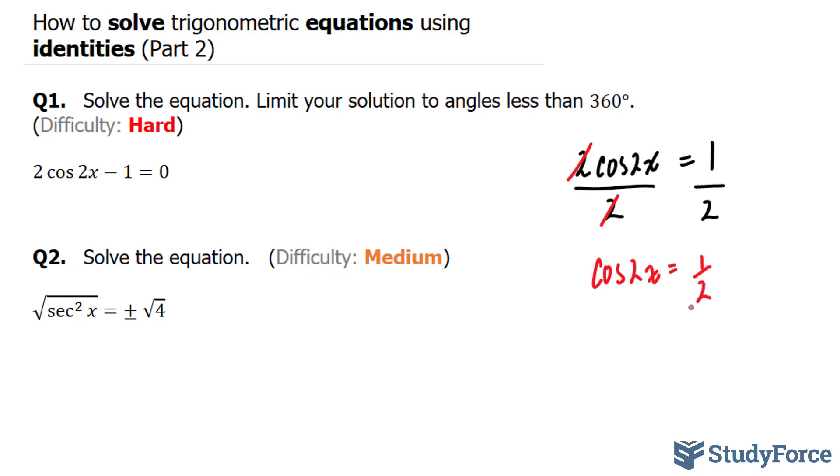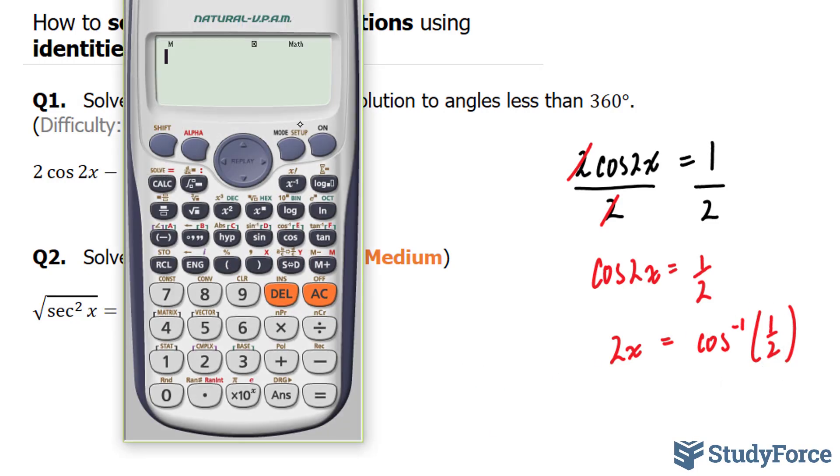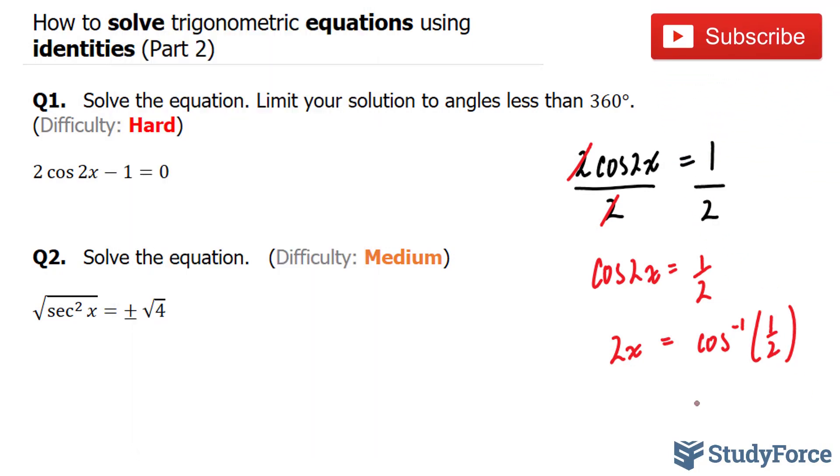Next, I'll use cosine inverse on both sides. This gives us 2x on the left side and cosine inverse of half on the right side. Now I need to find out what cosine inverse of half is equal to. Make sure your calculator is in degrees. Half, we get 60 degrees. 2x is equal to 60 degrees.